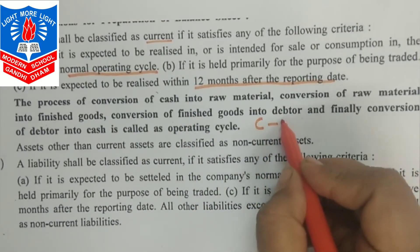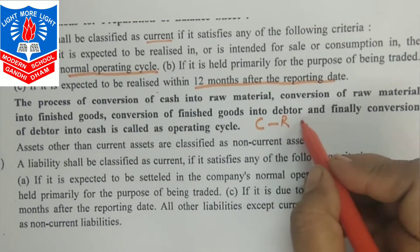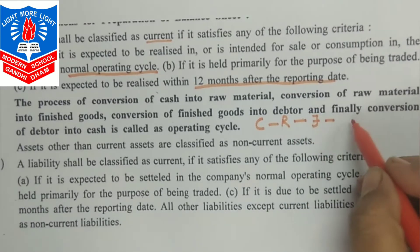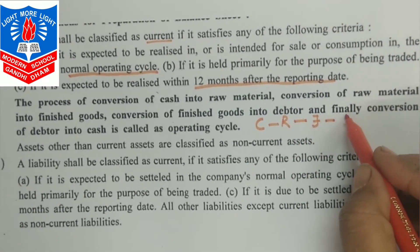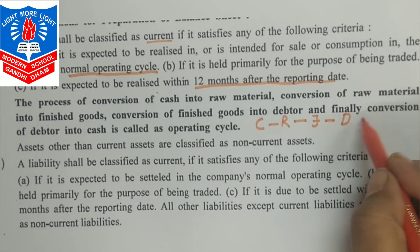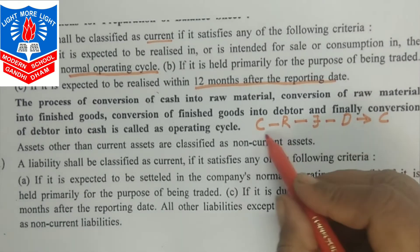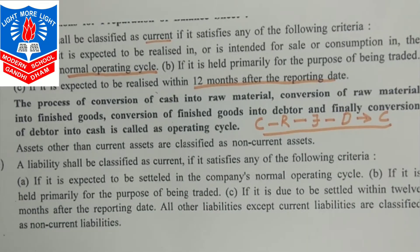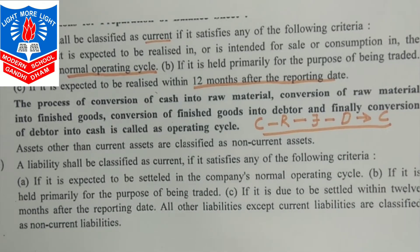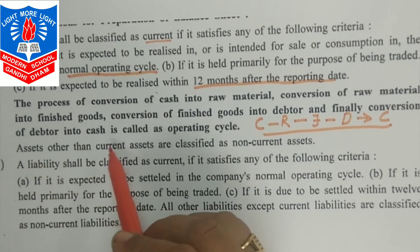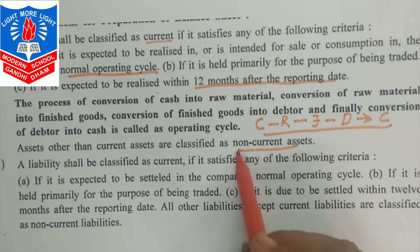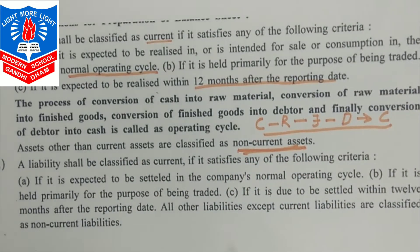Cash में से हम raw material खरीदेंगे, raw material में से finished goods बनाएंगे, finished goods बनाने के बाद जब credit पे sale होते हैं तो debtors होते हैं, फिर debtors में से वापस cash मिलता है। This cycle itself is known as the operating cycle. The assets other than current assets are classified as non-current assets.